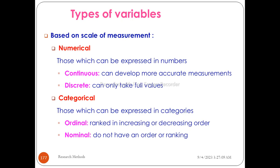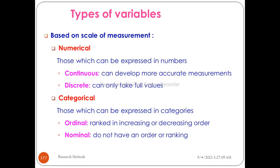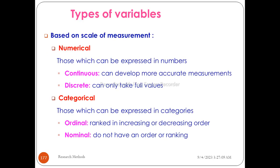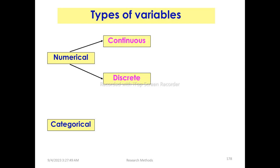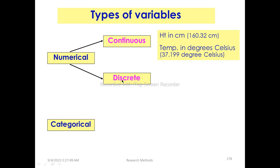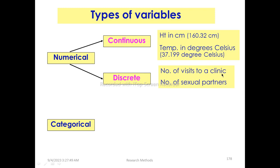So summarizing the types of variables: numerical variables include continuous and discrete types. Examples of continuous variables are height and temperature. An example of a discrete variable is number of visits.